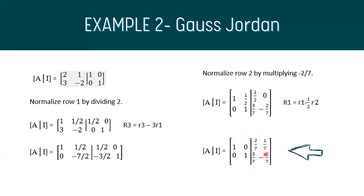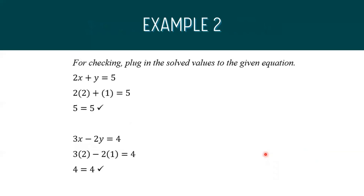We multiply by the inverse of A in the equation form AX equals B on both sides. For checking, plug in the solved values into the given equations, and we can see that the solved values of x equals 2 and y equals 1 are correct.